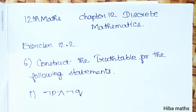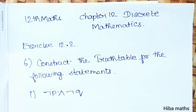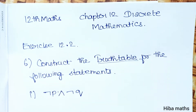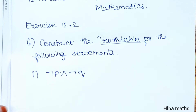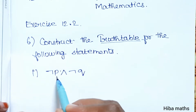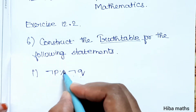Hello students, welcome to Hiba Max 12, Standard Max Chapter 12, Discrete Mathematics, Exercise 12.6, question: construct the truth table for the following statements. There are 4 subdivisions to be solved one by one. The 1st subdivision is NOT P AND NOT Q.